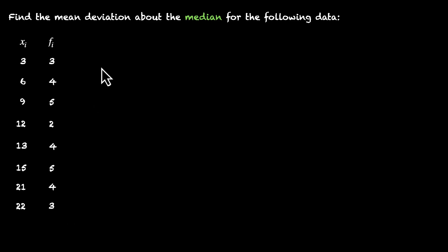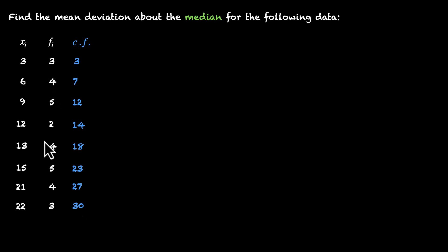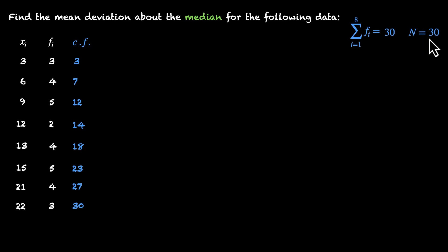For that we have these frequencies. Let's figure out the cumulative frequencies as well, so let's add a new column. The cumulative frequencies are: 3, then 3+4=7, then 7+5=12, 12+2=14, 14+4=18, 18+5=23, 23+4=27, and 27+3=30. So all the frequencies added together is 30, meaning we have 30 entries in this data set. We write this as n = 30.